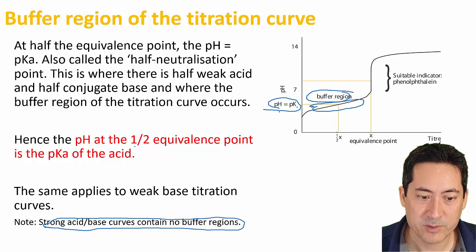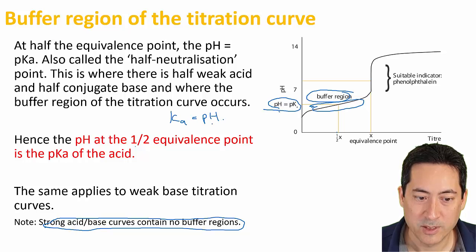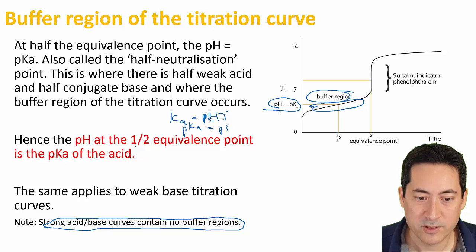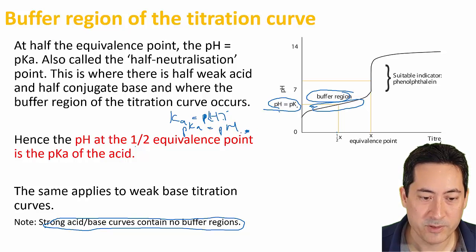Basically, if you know the half equivalence point, the pH at the half equivalence point will be the pKa, because the conjugate base, the acid and conjugate base are equal. Therefore the acid dissociation constant will end up working out to equal hydrogen ion concentration, I should say, and then take the logs, negative logs of those, as in the previous video.